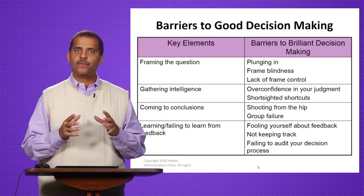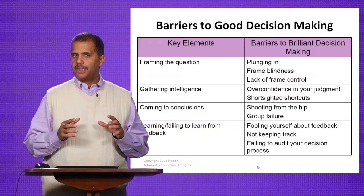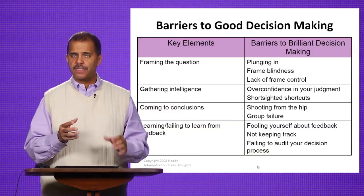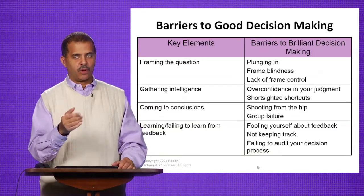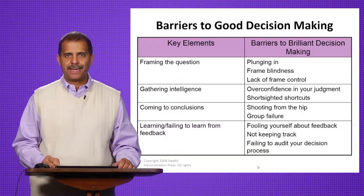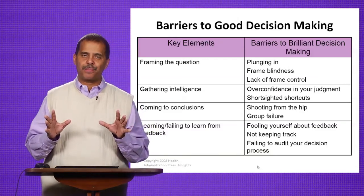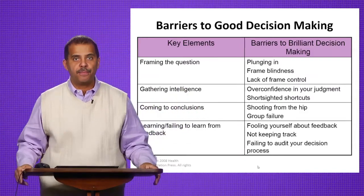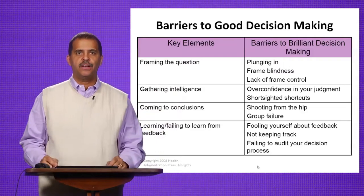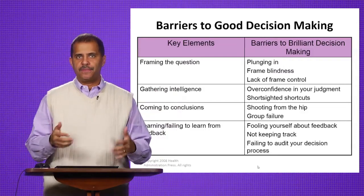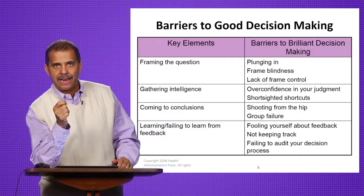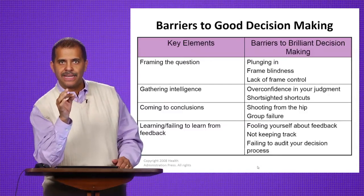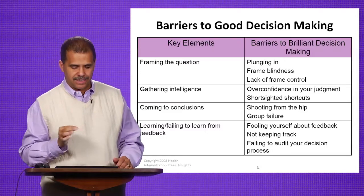The second barrier is gathering intelligence. Before you define the problem or develop solutions, use a technique called brainstorming. When you brainstorm, you gather as much information as possible — even information contrary to your initial point of view. You don't want only information that confirms your viewpoint; that's the echo chamber. What you want is information that may contradict your point of view.